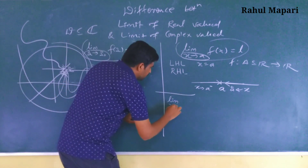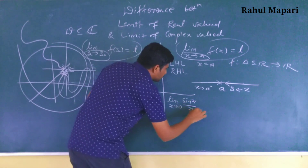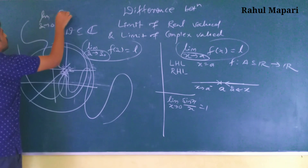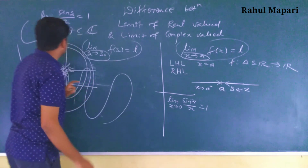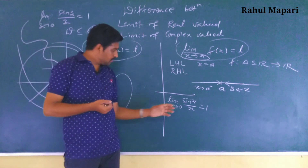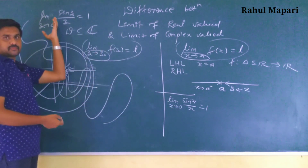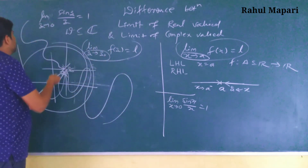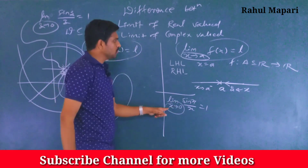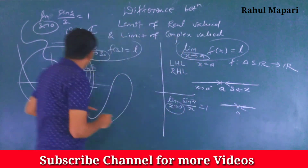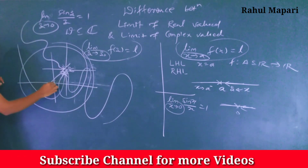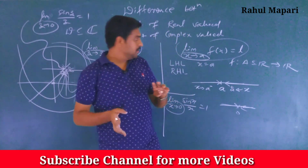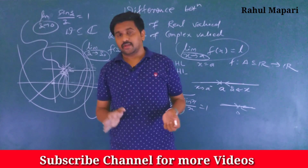For example, limit as x tends to 0 of sin(x)/x equals 1 in real analysis. Similarly, limit as z tends to 0 of sin(z)/z also appears to equal 1 — but we cannot use this as a formula in complex analysis. It requires a proper proof. The difference is that x tends to 0 on the real line means only left and right, but z tends to 0 on the complex plane means z may approach along any path.